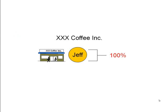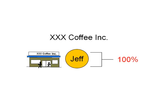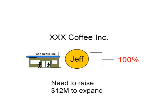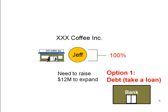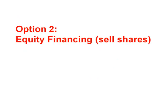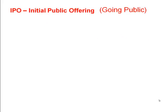Another advantage of the corporation is that it's easier to raise money with more options. Suppose Triple X Coffee Incorporated is 100% owned by Jeff, and he wants to expand and needs $12 million. One option is debt financing — borrowing the money from the bank. However, the bank may see $12 million as too risky, or Jeff may not want to pay the interest back.